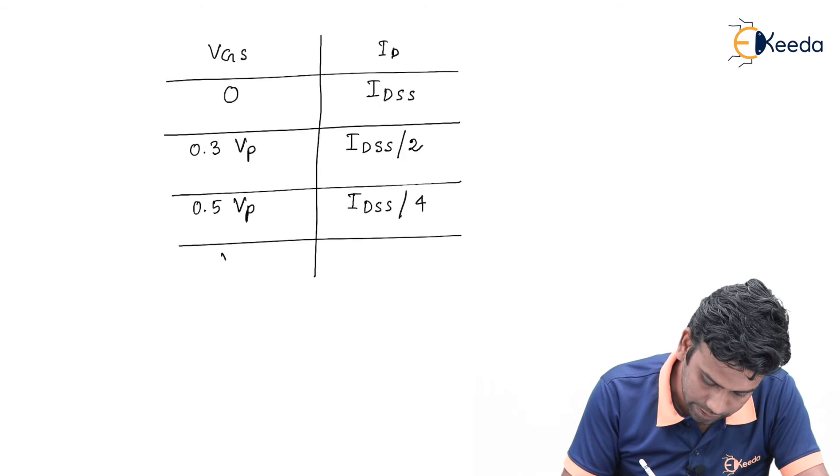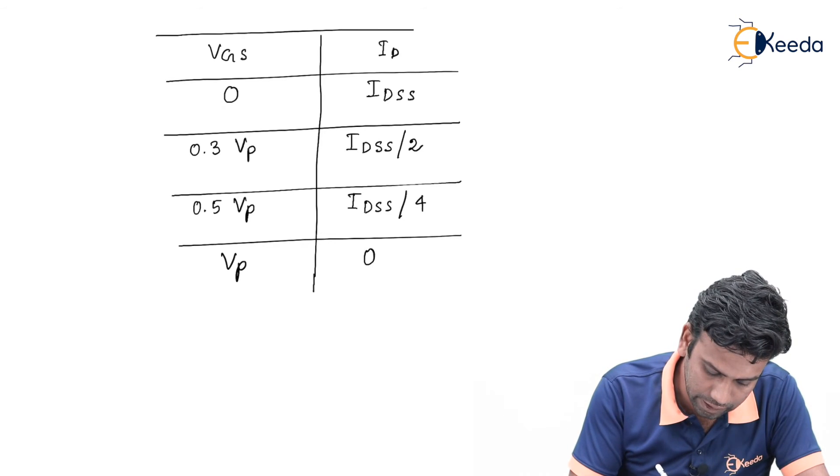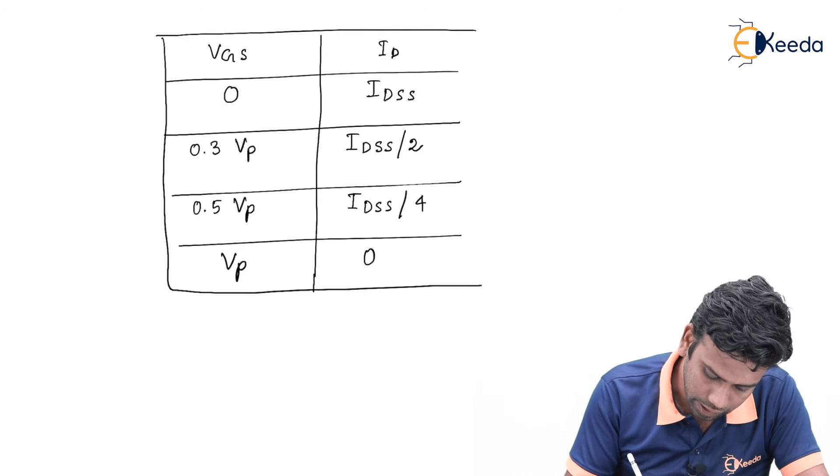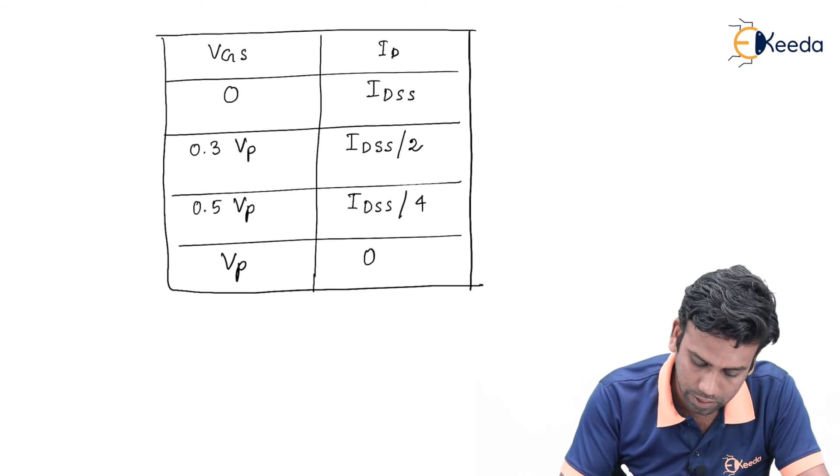And if Vgs equals Vp, that is the pinch-off voltage, then ID will be 0. This is the chart that will be very helpful in the numerical problems of the gate examination, so try to remember this.